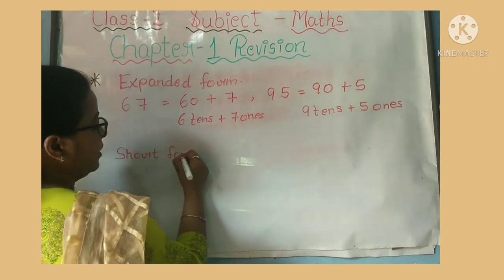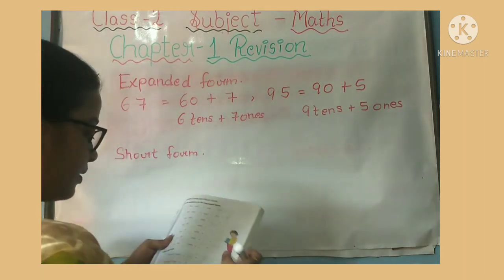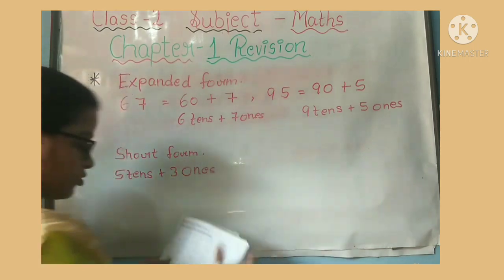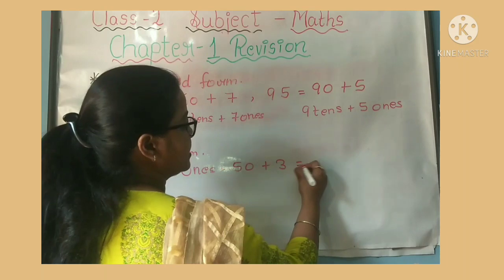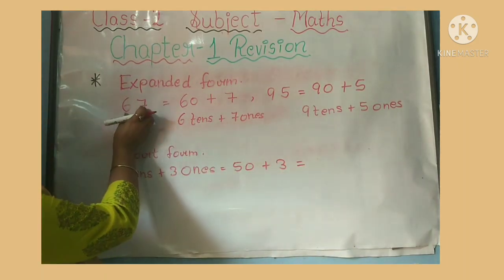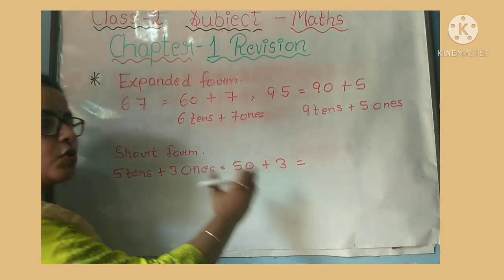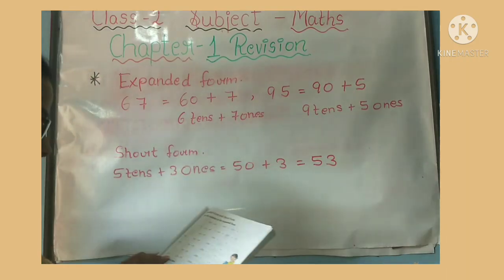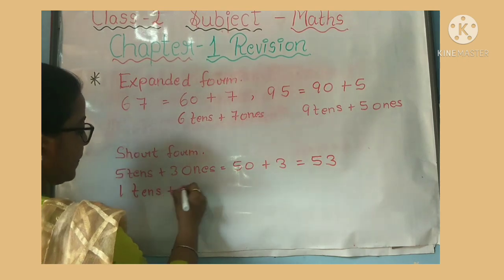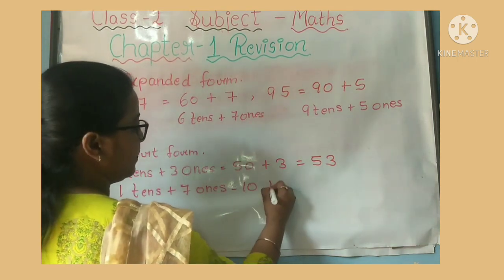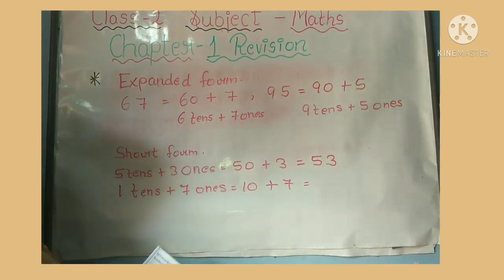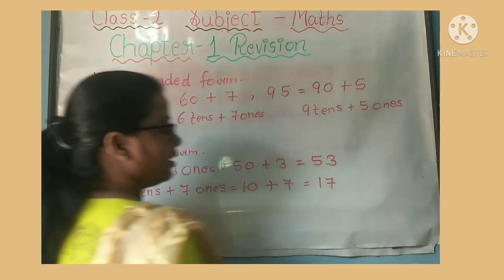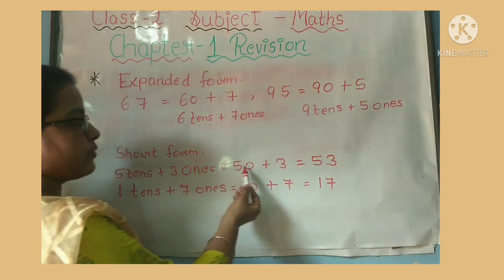Now we will talk about short form. In short form, given: five tens plus three ones equals fifty plus three. You will be given expanded form and you have to write the short form. For example: five tens plus three ones — 50 + 3 = 53. Very easy: five, three — fifty-three. Next: one ten plus seven ones = ten plus seven = seventeen.